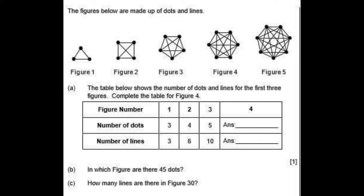Figure one has three dots and is connected by three lines. Figure two has four dots and is connected by six lines. Basically every dot is connected to every other dot by a line.